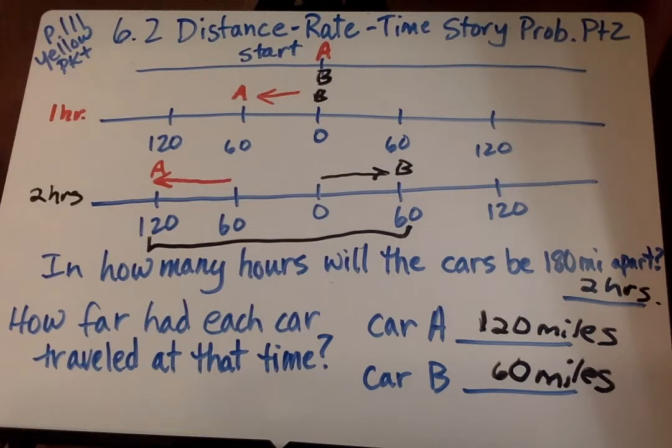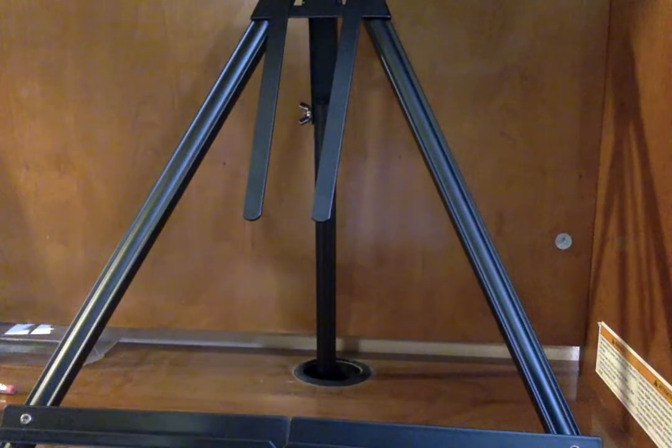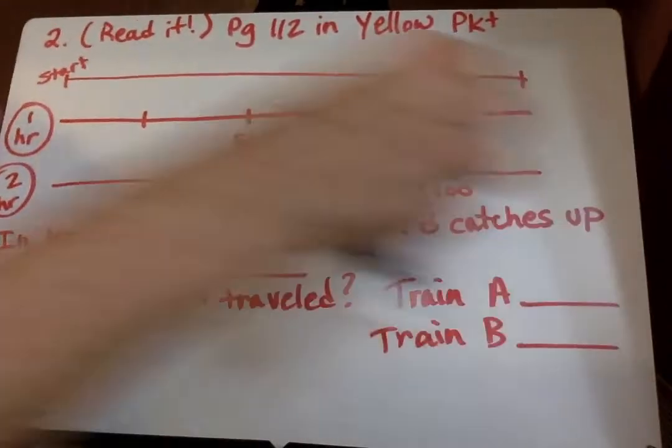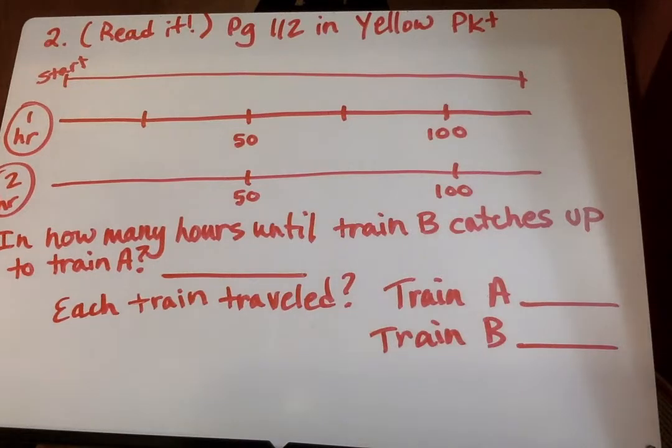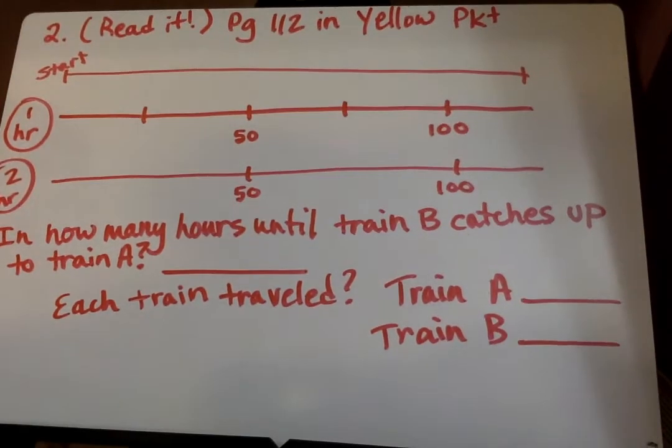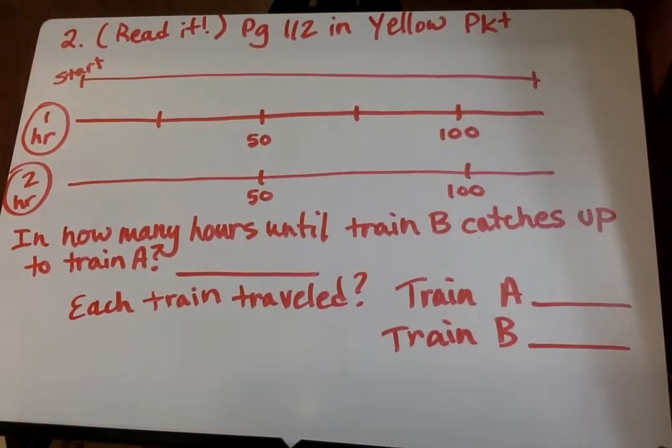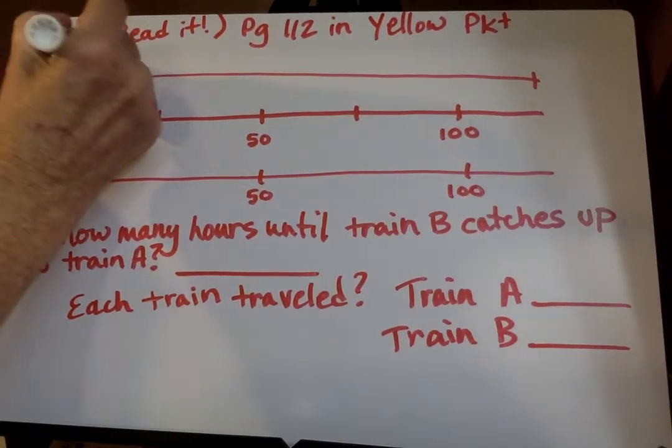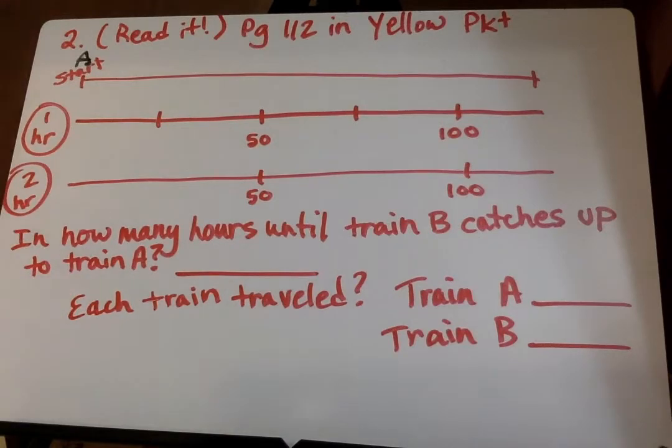So now we're going to go on to the next one, page 112. And we're going to look at the next one. And I will go ahead and read it. Now it says two trains leave the same station at different times and travel in the same direction. Train A leaves first and travels at 50 miles per hour. Train B leaves an hour later and travels at 100 miles per hour. In how many hours will train B catch up to train A? So at the very beginning, we know that A and B are both here. These are trains this time, train A and train B.